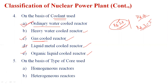The fifth classification is based on type of core used. There are two types: one is the homogeneous reactor and another one is the heterogeneous reactor. Maximum nuclear power plants prefer homogeneous reactors. These are the various classifications of nuclear reactors used in nuclear power plants.